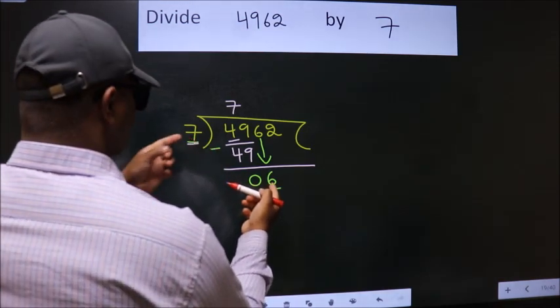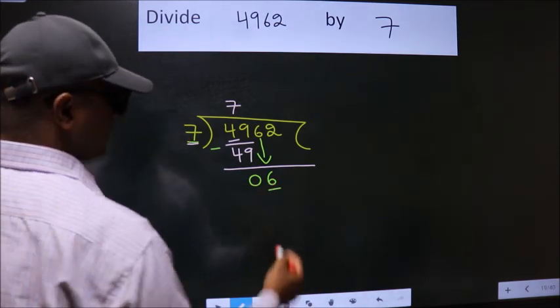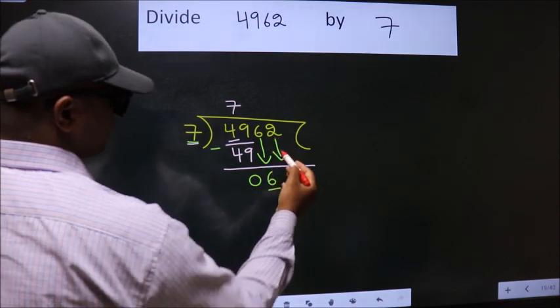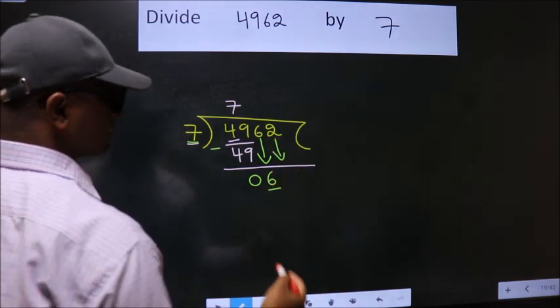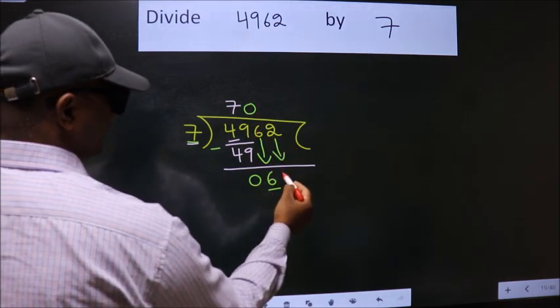6 is smaller than 7. So we should bring down the second number. And the rule to bring down second number is put 0 here. Then only we can bring down this number.